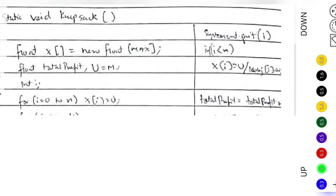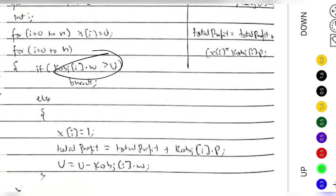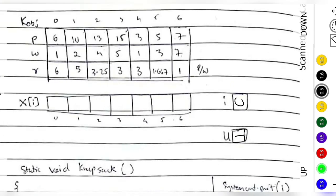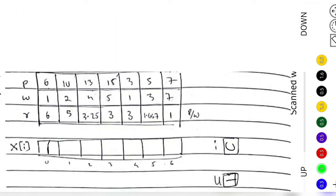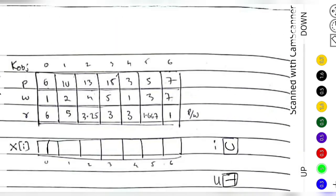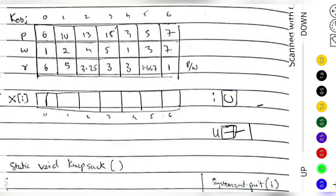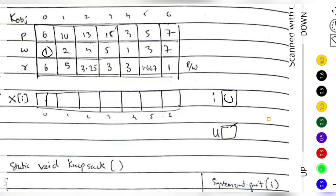Since it's not greater, the else branch executes and x[0] becomes 1. Either we take the item (1) or not (0). We've taken the first element. A correction here — the capacity is actually 15, not 7. So after taking the 1-kilogram item, the remaining capacity is 15 minus 1, which is 14. u is now 14.